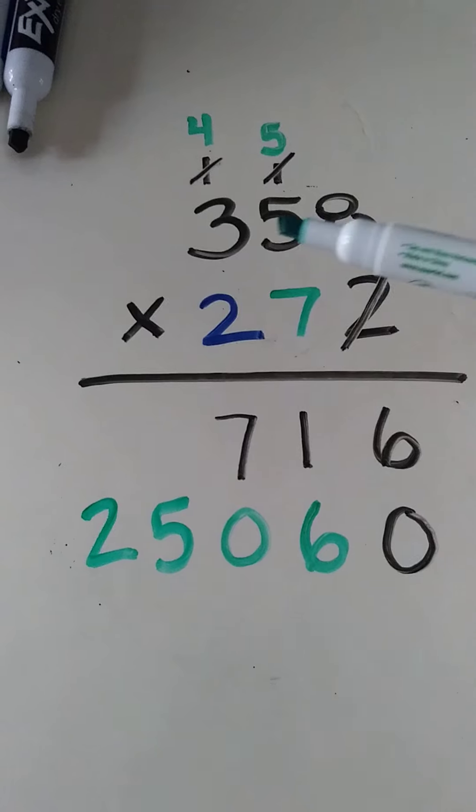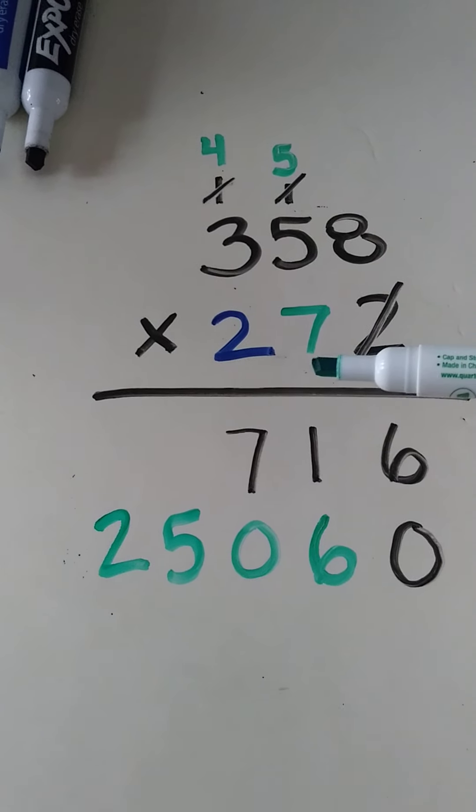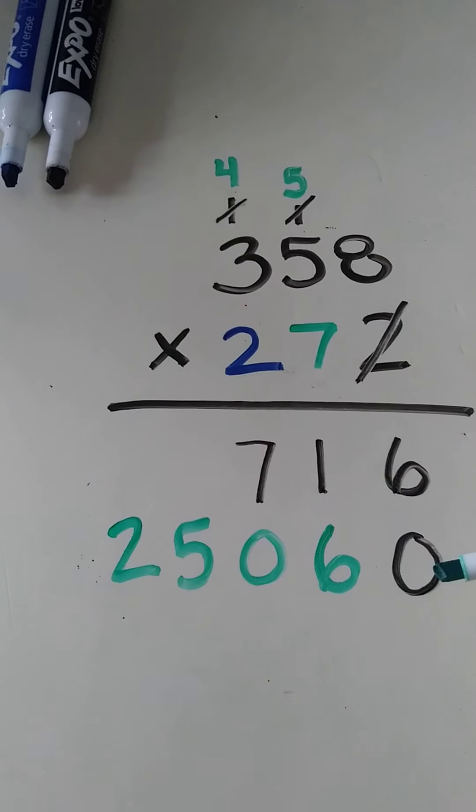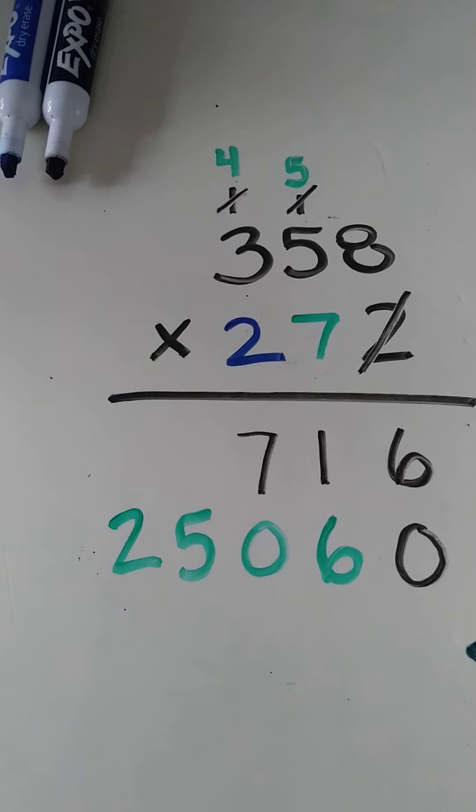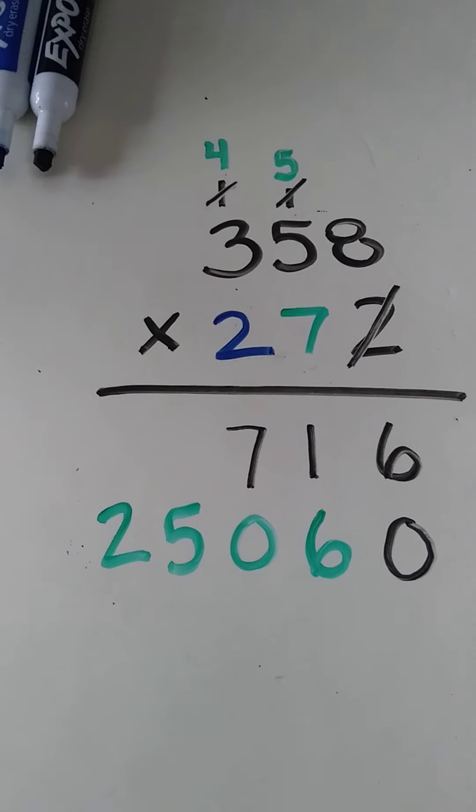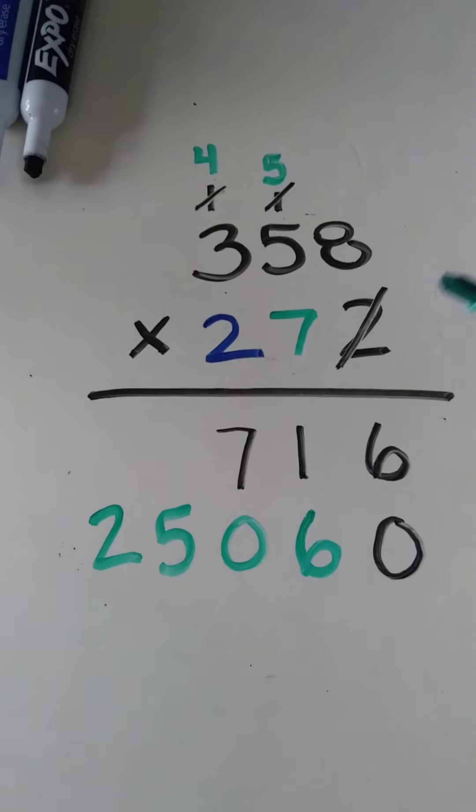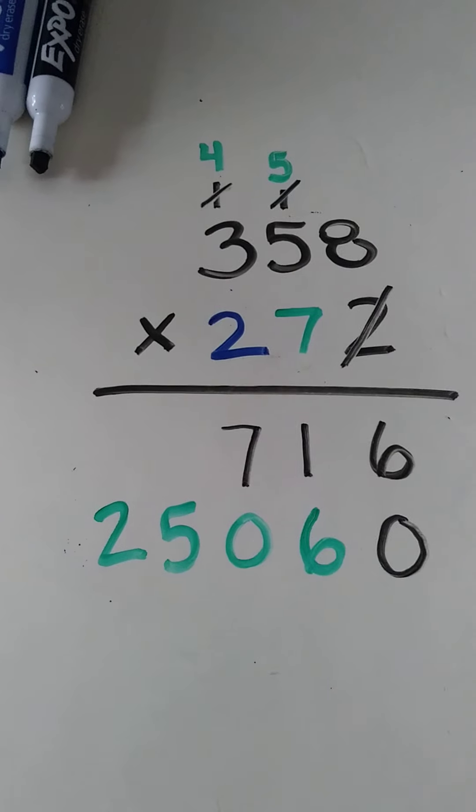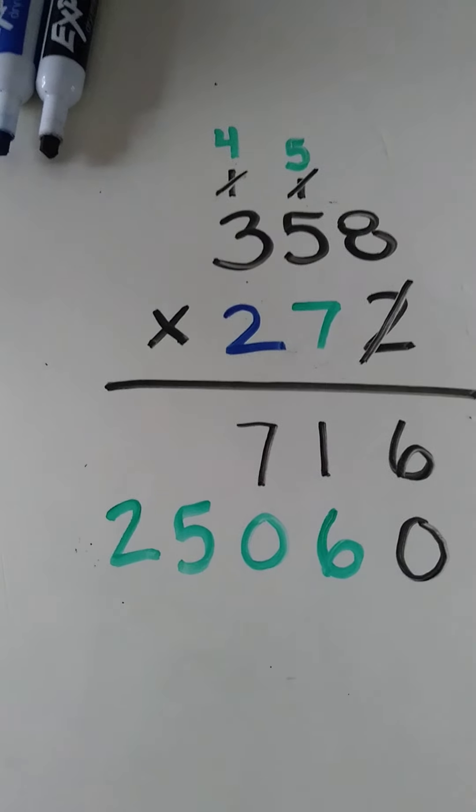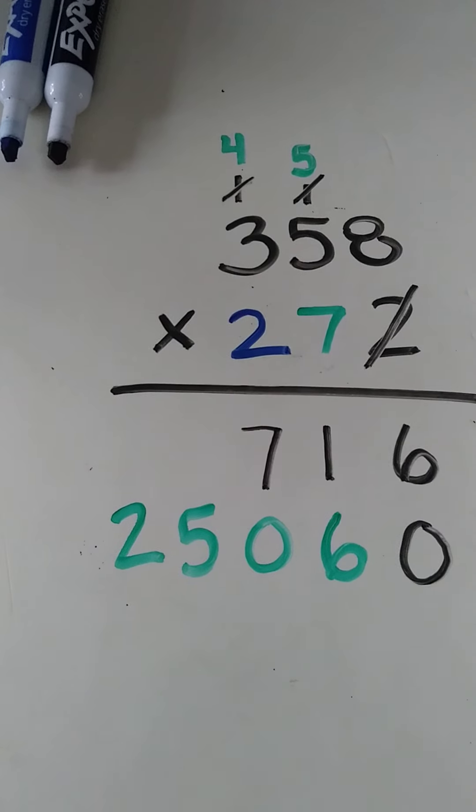And there we go. So we just did 358 again times 70. That's a zero there to hold our place to let us know that we're working in the tens place. So again, same thing. Now if I was just multiplying by two digits, like in other videos, I would stop there and add this together. But now we're going to do the exact same thing but just add another step because we have another digit there.